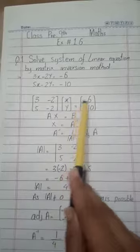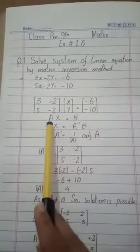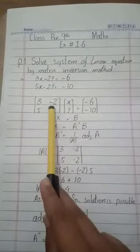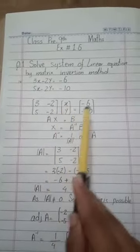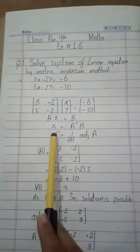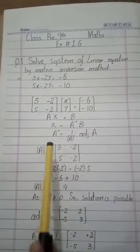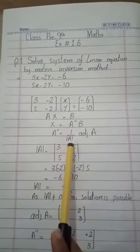Then x and y equals minus 6 and minus 10. AX equals B. A is this matrix, X is this, and B is this. Now the formula is X equals A inverse B. First we find the inverse, which is 1 over the determinant of A times the adjoint of A.